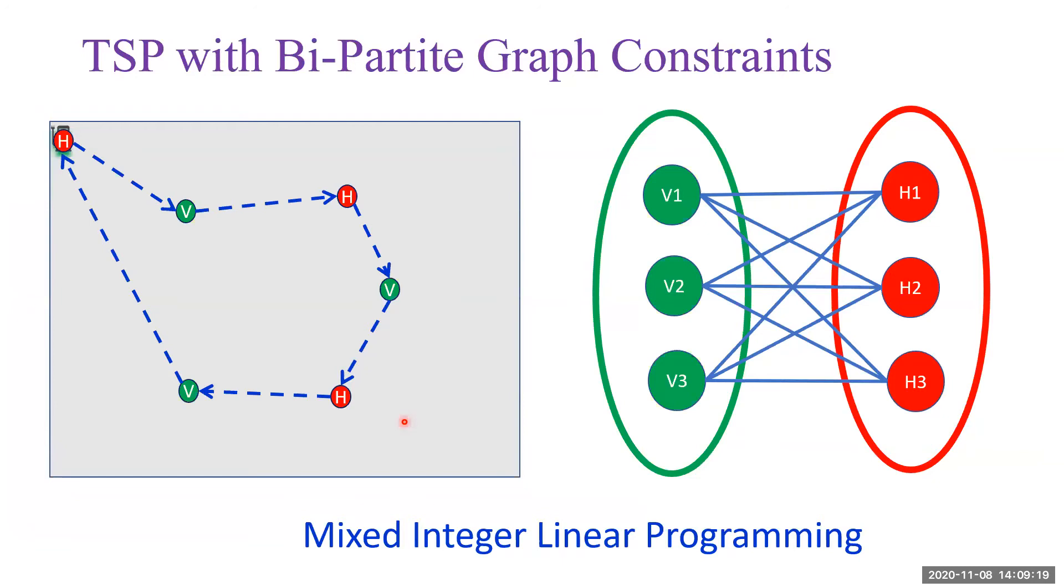Once we have found the optimal charging location and the optimal coverage formations, the next task is to find the optimal switching between the two formations. Let's make an assumption here: if all agents are of the same type, they need to take turns to visit the charging station and visit all locations in both optimal coverage locations and optimal charging locations.